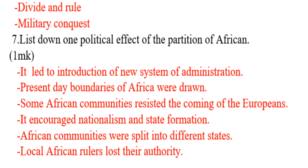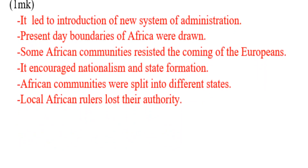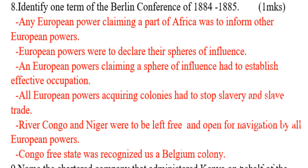Question number seven: list down the political effects of the partition of Africa. It led to the introduction of a new system of administration. Present-day boundaries of Africa were drawn. Some African communities resisted the coming of Europeans. It encouraged nationalism and state formation. African communities were split into different states, and local African rulers lost their authority.